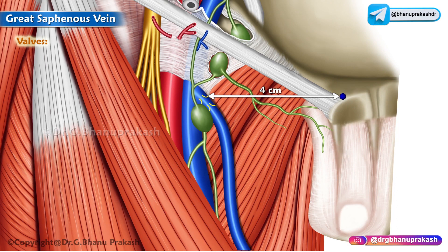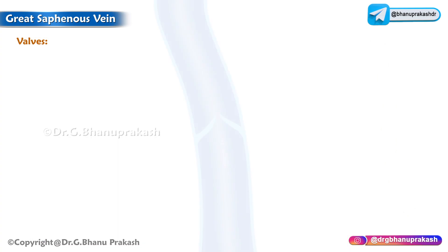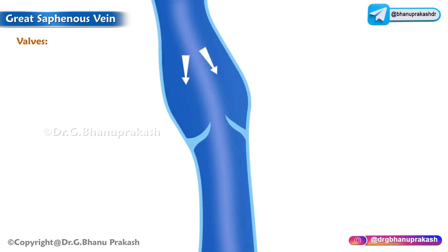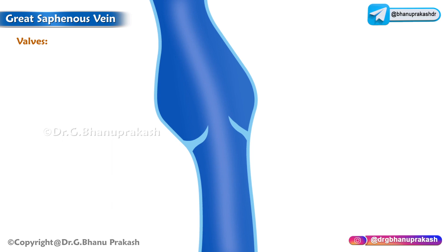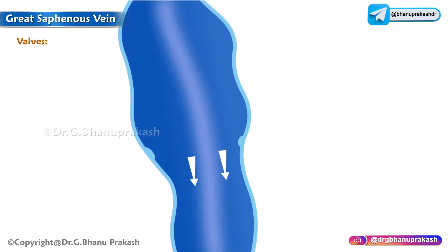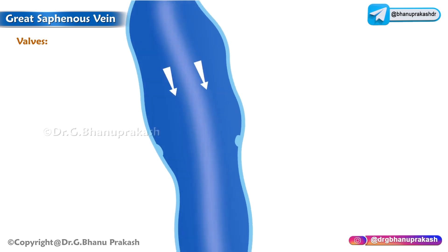The saphenofemoral valve is of extremely great functional importance because it lies about 3.5 to 4 centimeters inferolateral to the pubic tubercle. In approximately 80% of individuals, the external iliac vein possesses a valve which protects the saphenofemoral valve against high venous pressure. In approximately 20% of cases, individuals who do not have this valve become victims of high venous pressure and develop varicose veins.